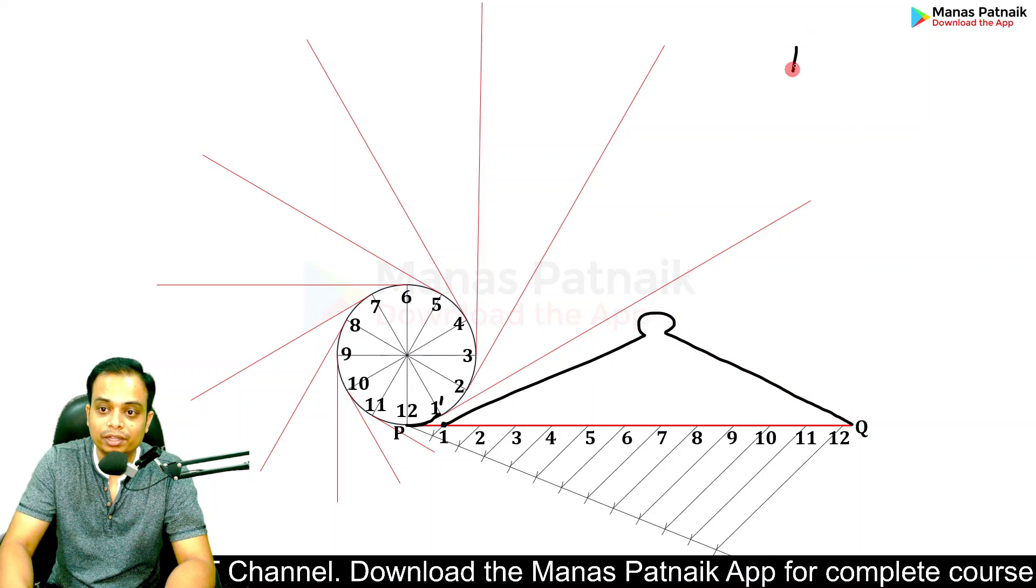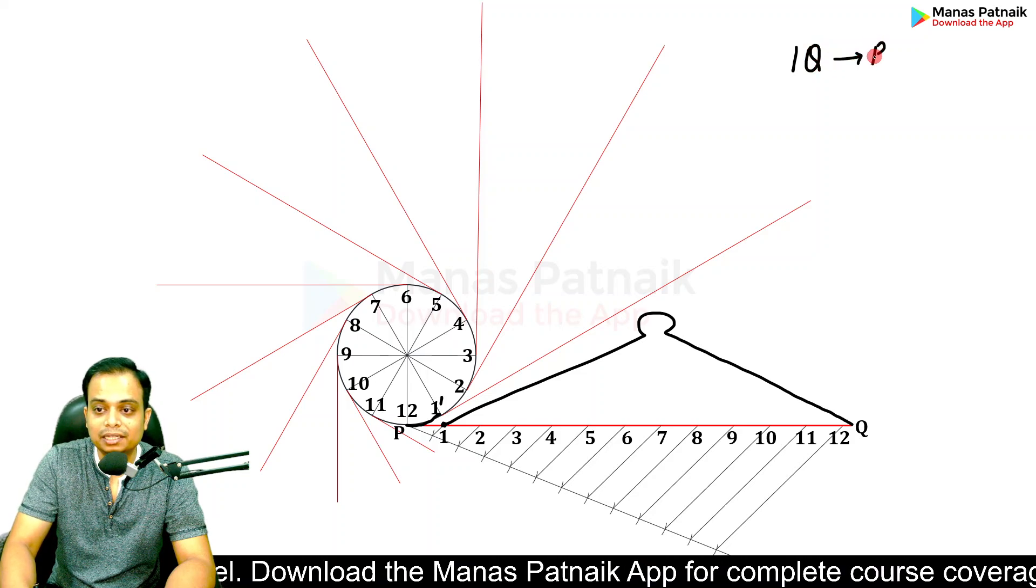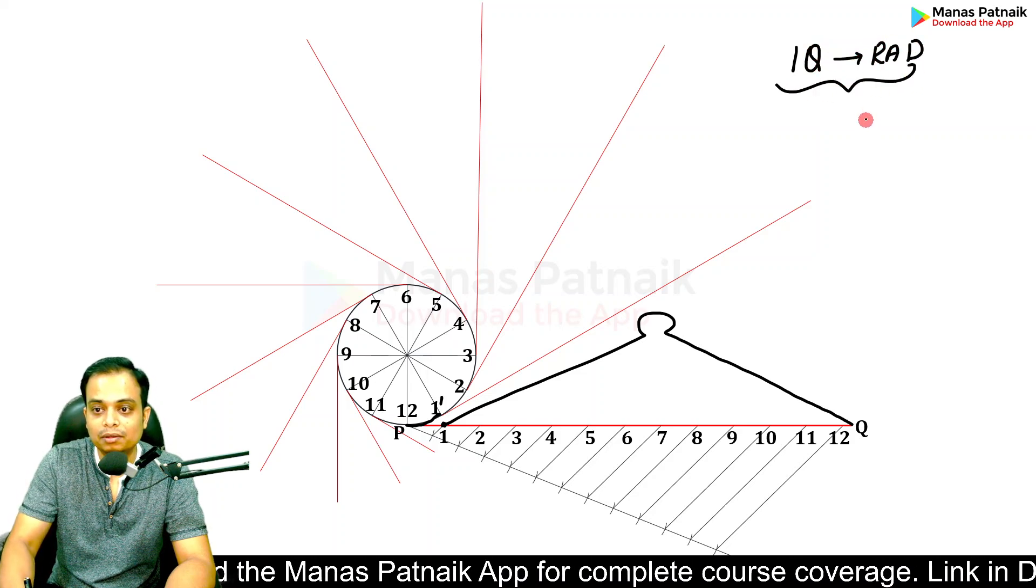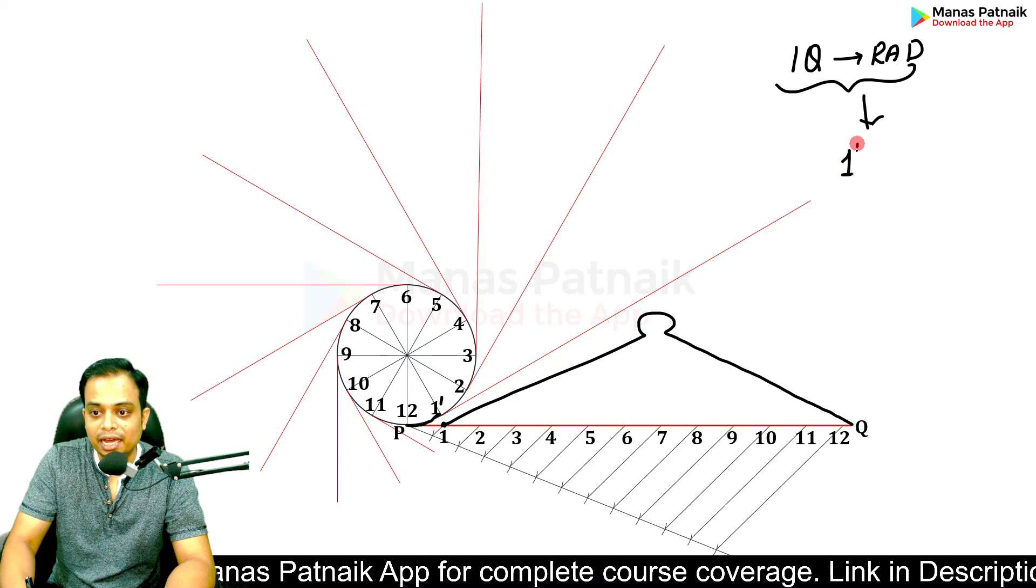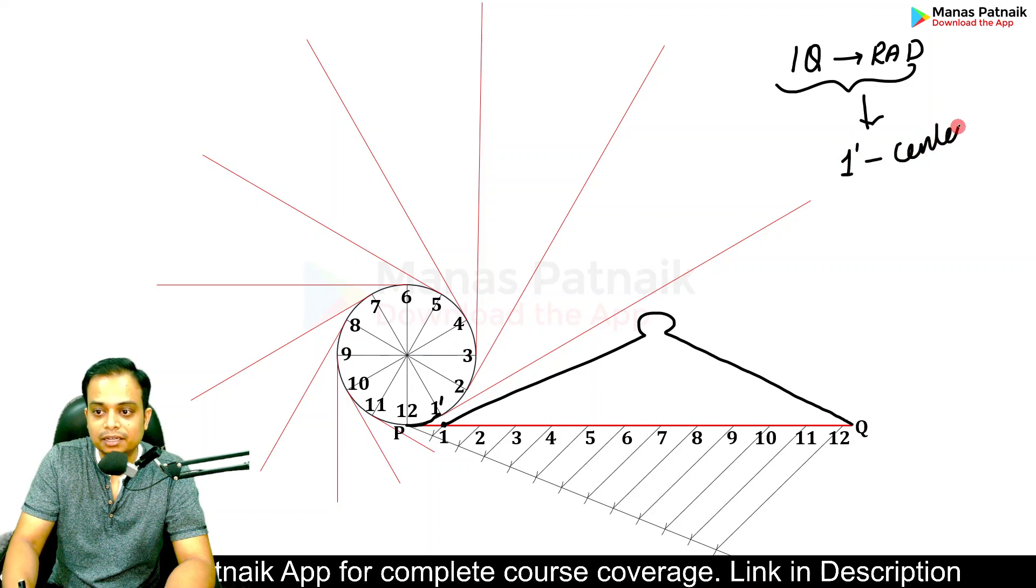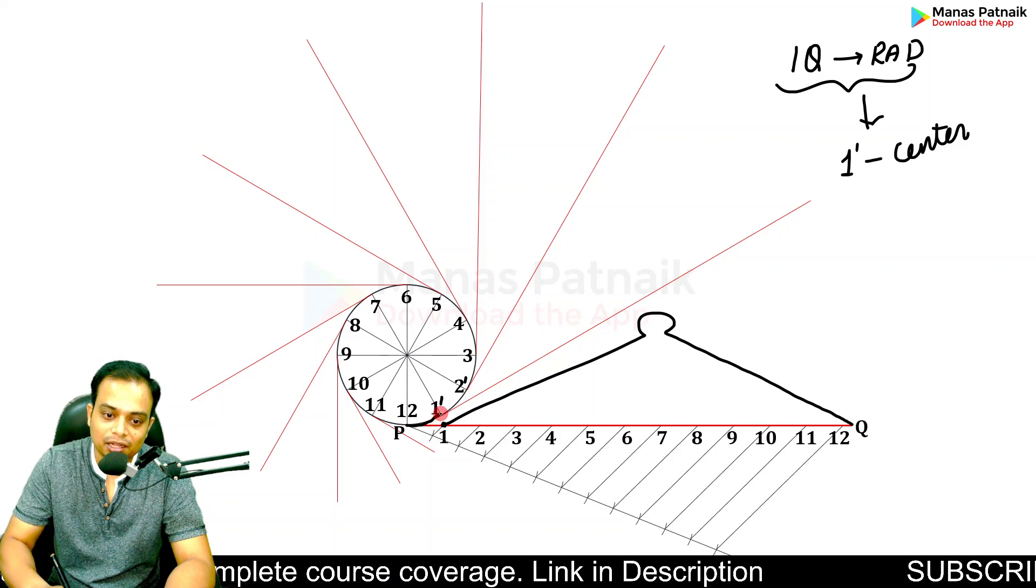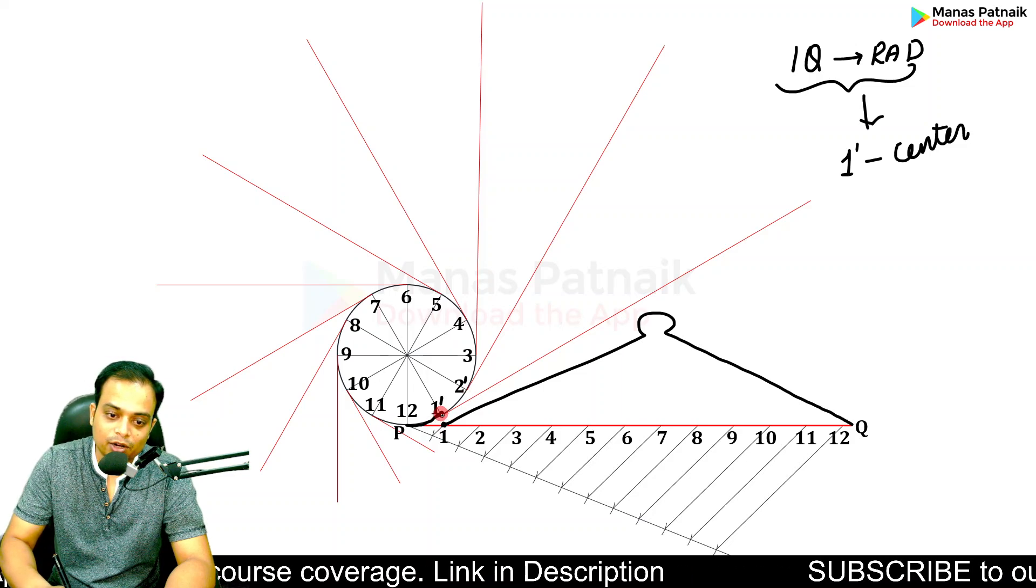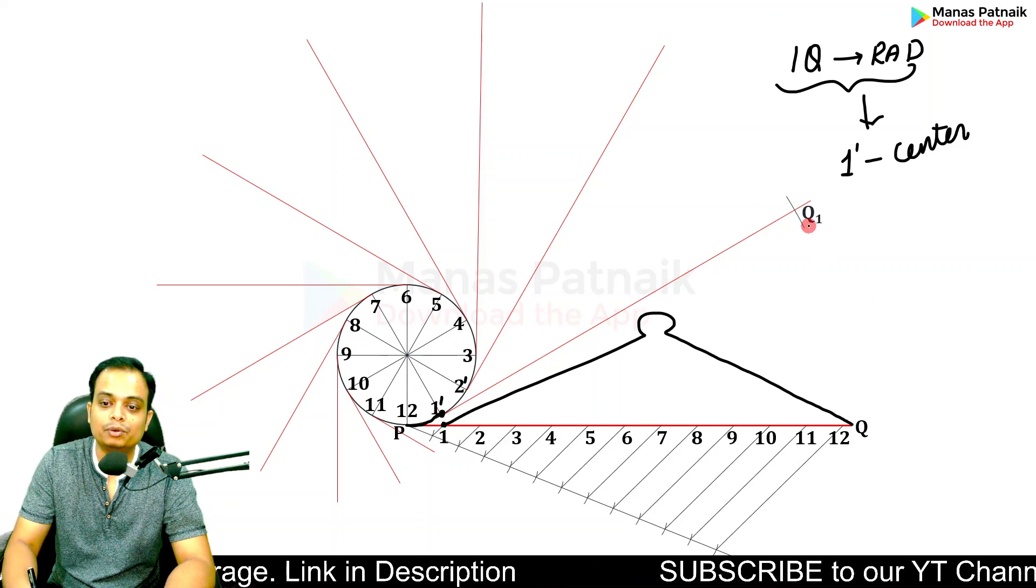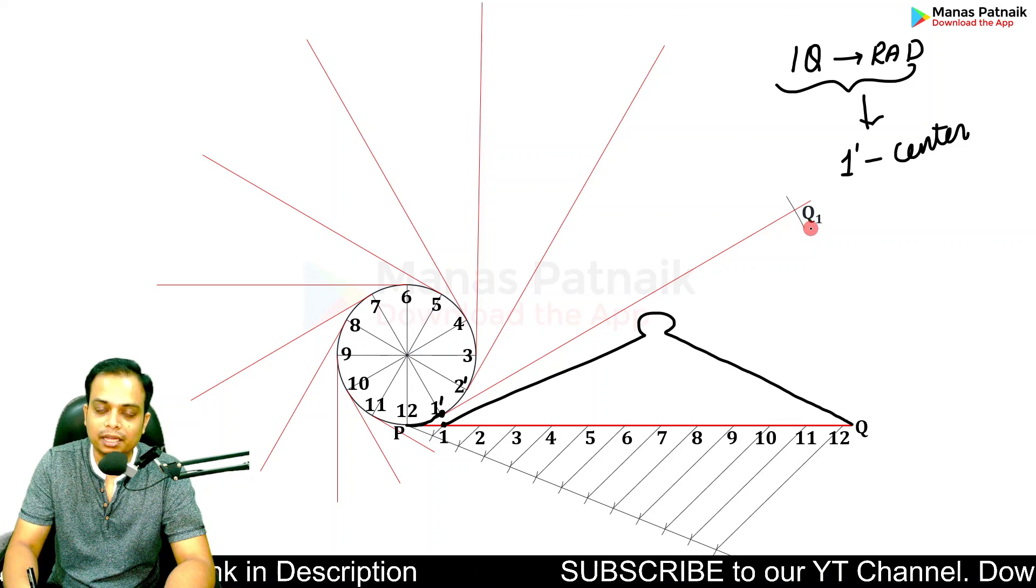How much is left? From one dash to Q over here somewhere. With this much—from one to Q—as the radius, with one dash as the center, you keep the steel end of your compass over here and then cut an arc. This is going to give you Q1.